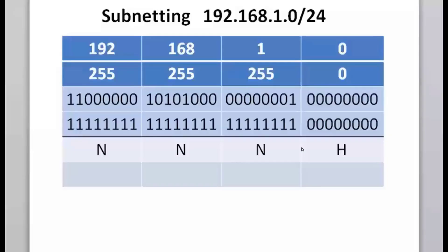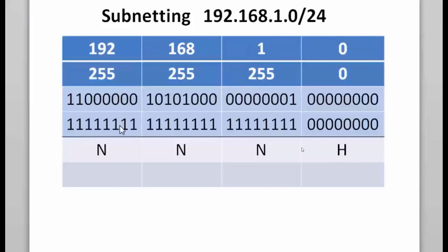This video focuses on subnetting and how to find your subnetworks easily and quickly using the magic number trick. We're subnetting a 192.168.1.0 network slash 24. The IP address and subnet mask are shown in decimal and binary, with the network portion and host portion of the subnet mask labeled.